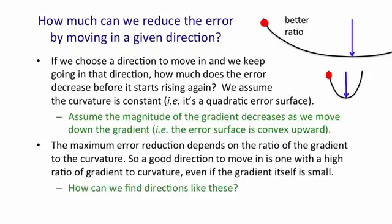The question is, how can we find directions like that second one? Directions in which, even though the gradient may be small, the curvature is even smaller.